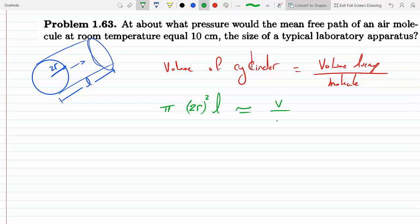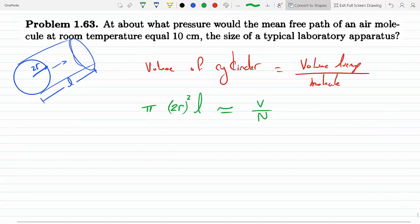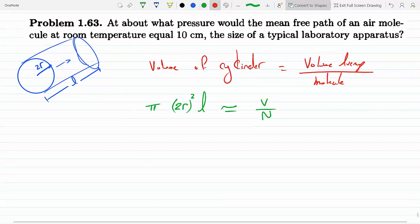Per the number of molecules. Okay, and here in this specific case, it's saying at about what pressure? So to get pressure in here we would have to use the ideal gas law. We know that PV equals NκT.